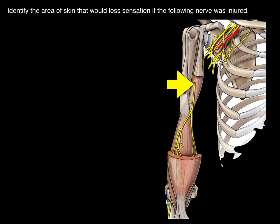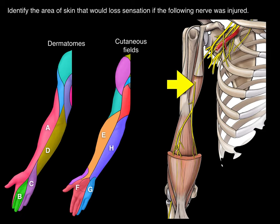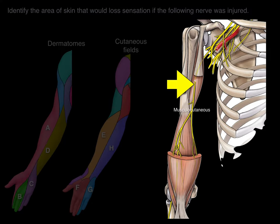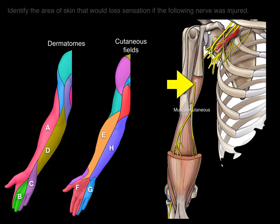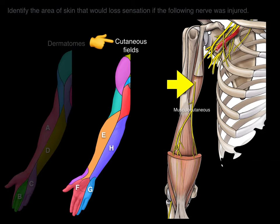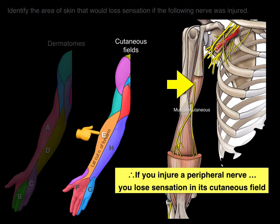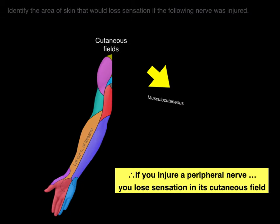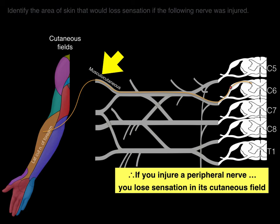Let's do practice. Identify the area of skin that would lose sensation if the following nerve was injured. Now identify the letter where sensation would be lost. The musculocutaneous nerve is injured, which means I need to determine if this is a dermatome or cutaneous field — since it's a peripheral nerve, it's a cutaneous field that will be affected. The musculocutaneous nerve gives rise to the lateral cutaneous nerve of the forearm, which is the correct answer. If you injure a peripheral nerve, you lose sensation in its cutaneous field. Knock out the musculocutaneous nerve, you knock out the lateral cutaneous nerve of the forearm.